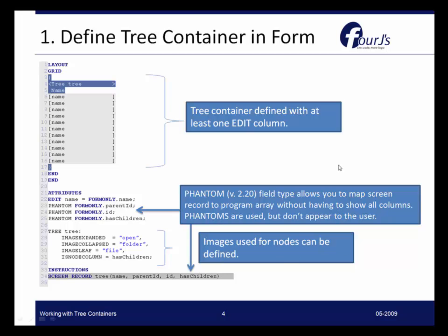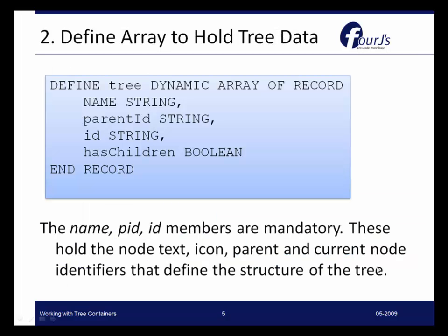Once we've defined our tree container and identified its attributes, the next step in the program itself is to define an array. Here we're defining a dynamic array, and notice that it has the same columns and the same information as was in our screen record — these are required, as we're going to need this information in order to manage the tree view in our code.